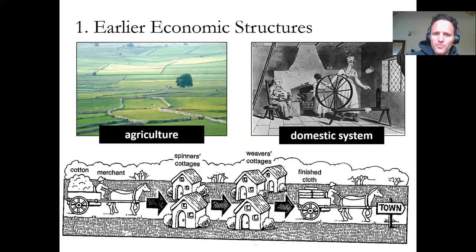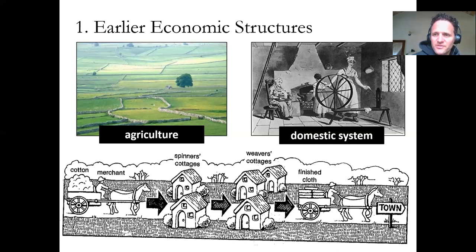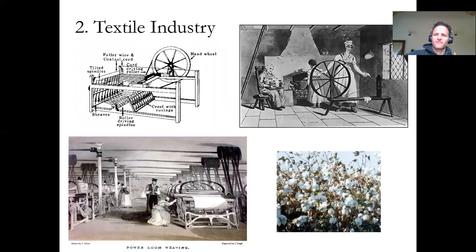The early economic structures that preceded factories — what existed before industrialization — was something known as the domestic system or the cottage system, and farming. In the domestic system, people would produce goods: they would make shirts and shoes and things like that, and there might be an expert who would make shoes or shirts. But a lot of the work was done by individuals at a local level — it wasn't done on a national or regional level.